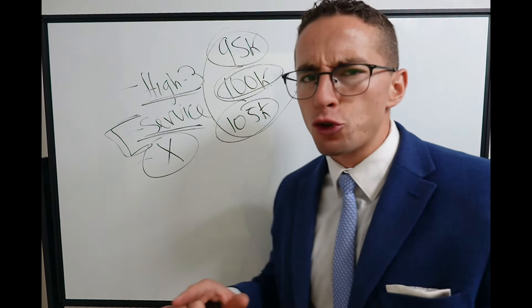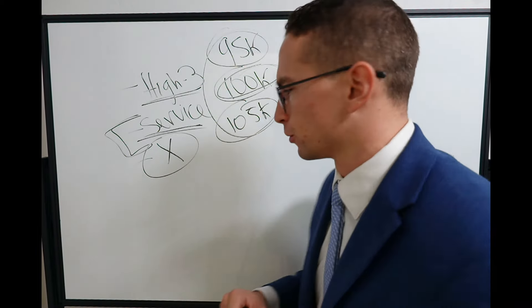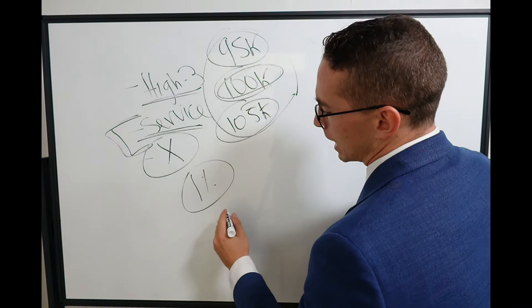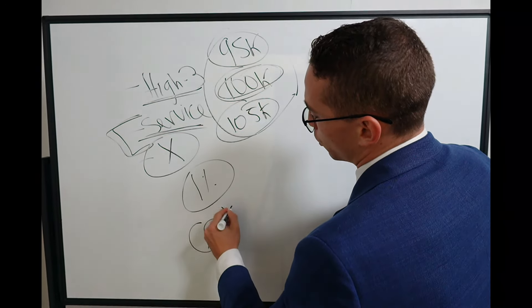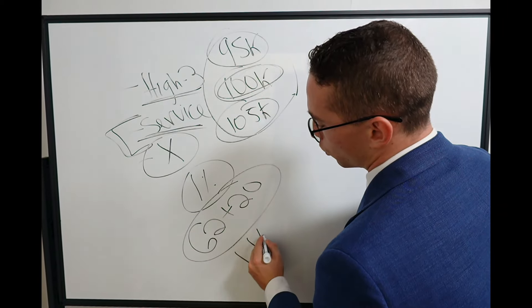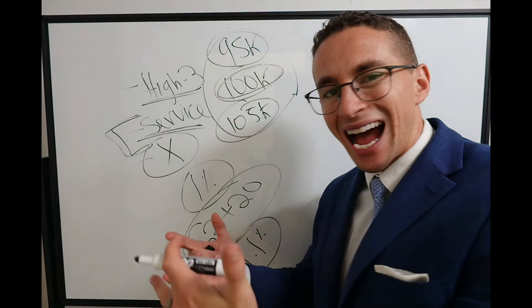Now, your multiplier is one of three things. Number one, if you're just a normal federal employee, your multiplier is 1%. That's the default. If you're age 62 with at least 20 years of service at retirement, it goes to 1.1%, 10% higher.